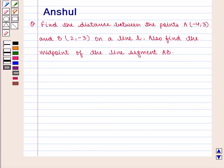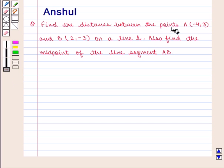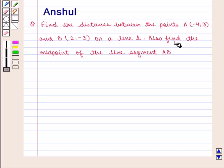Hello and welcome to the session. In this session, we are going to discuss the following question: Find the distance between the points A with the coordinates (-4, 3) and B with the coordinates (2, -3) on a line L. We will also find the midpoint of the line segment AB.